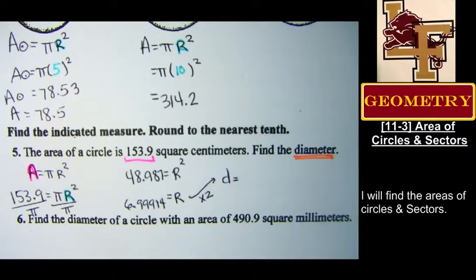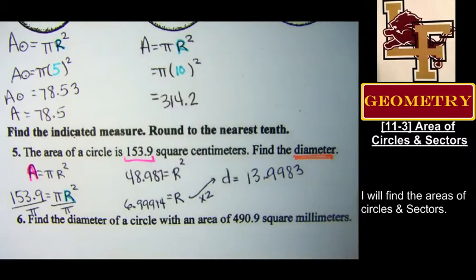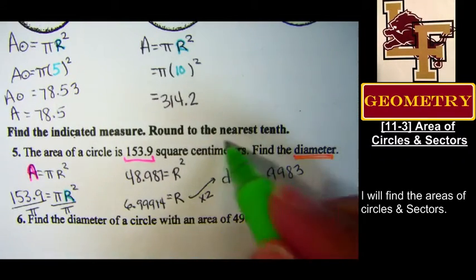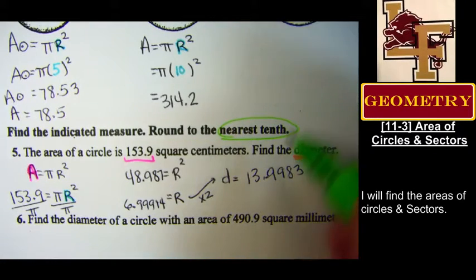13.9983. How many decimal places am I supposed to round to? Nearest tenth. That's the first decimal place.